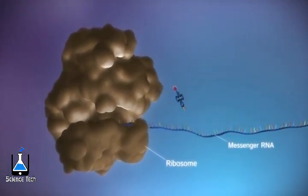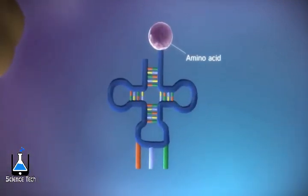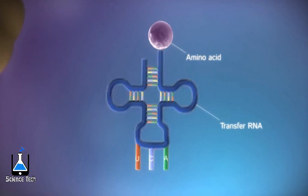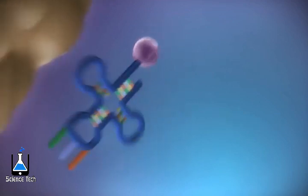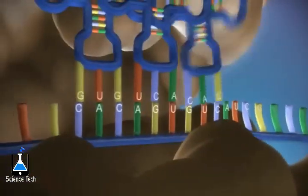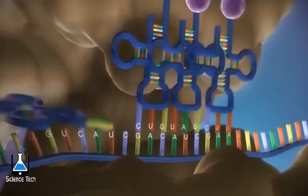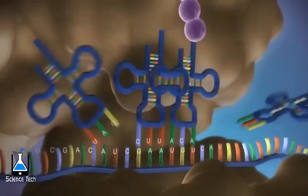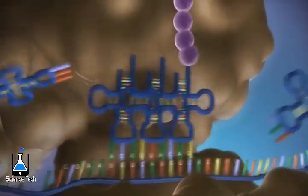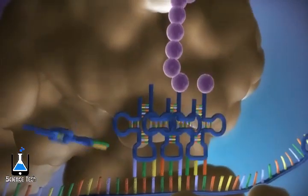Protein factories in the cytoplasm called ribosomes bind to the messenger RNA. The ribosome reads the code in the messenger RNA to produce a chain made up of amino acids. There are 20 different types of amino acids. Transfer RNA molecules carry the amino acids to the ribosome, and the messenger RNA is read three bases at a time.